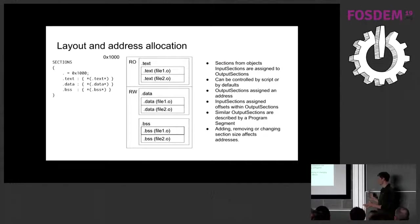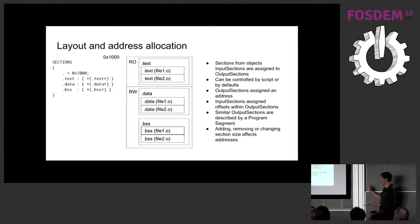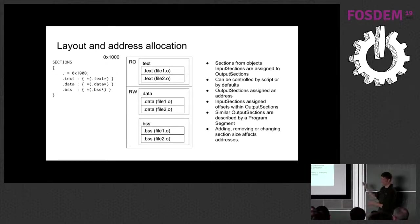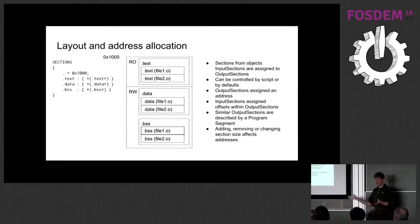For layout, you start with an output section and then put all the input sections that match its particular pattern. You start with the address at the top and then add address offsets from that particular base as you go, with various alignment constraints. That's generally a fairly straightforward process for a linker to do.